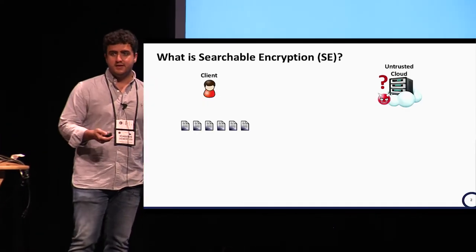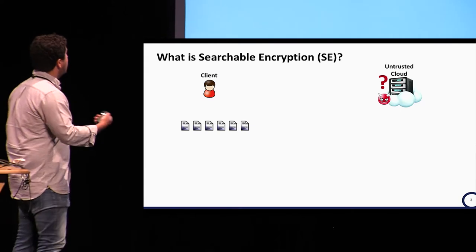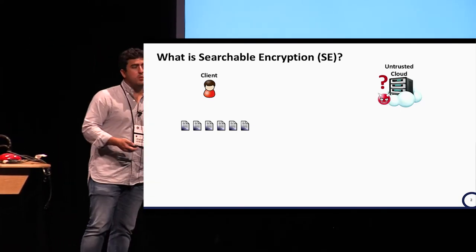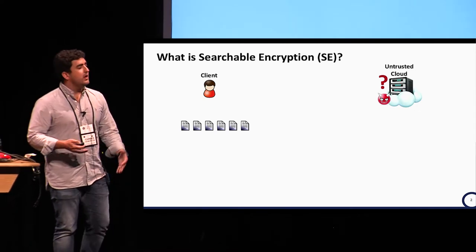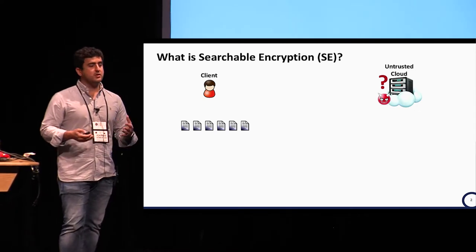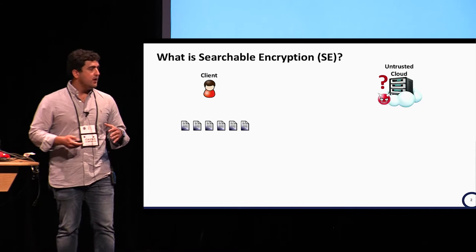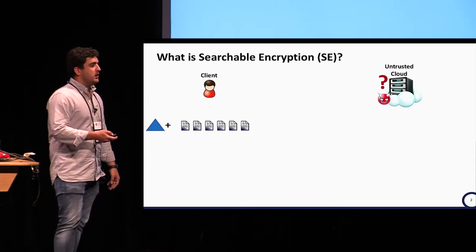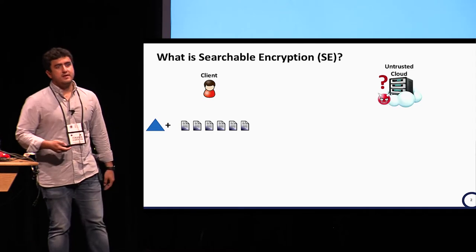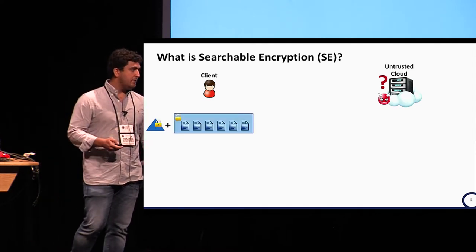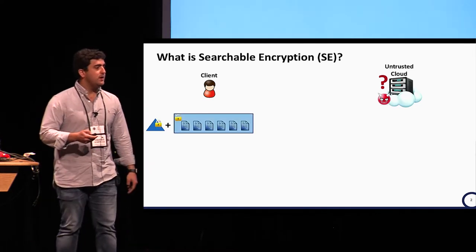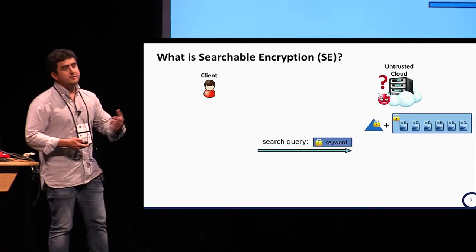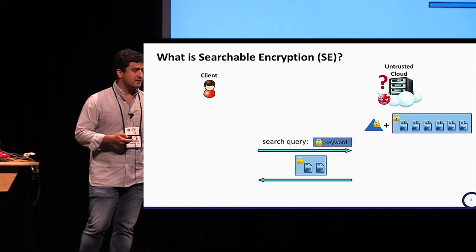Tariq gave a great intro to searchable encryption. As a quick recap, in searchable encryption we have a client who owns a document collection and wants to outsource it to an untrusted cloud without losing search capability. We create an index, encrypt the index, encrypt the documents, and upload everything to the untrusted cloud.